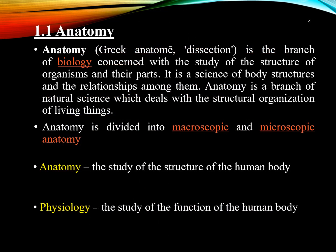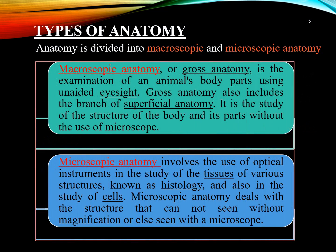Now we are going to discuss about anatomy. Anatomy is the branch of biology concerned with the study of the structures of organisms. It is a science of body structures and relationships among them. Anatomy is divided into two parts: macroscopic anatomy and microscopic anatomy. Macroscopic anatomy is also called gross anatomy — it is the examination of human body parts using the normal eye or unaided eyesight, without using a microscope. Microscopic anatomy involves the use of optical instruments to study the tissues of various structures, which is known as histology.